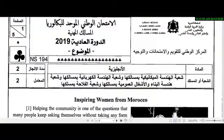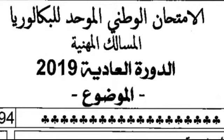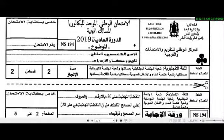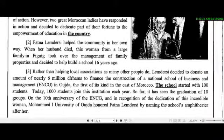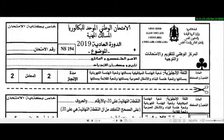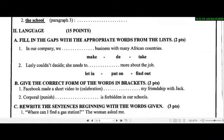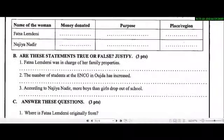Hello everyone. Today I'm going to give you an idea about how the national exam would be like. The national exam is composed of three parts. The first part is a text with comprehension questions — you can see here we have one paper just for the text. The second paper has the comprehension questions. The second part of the national exam is language, which is worth 15 points. The last part is writing, which is on 10 points.